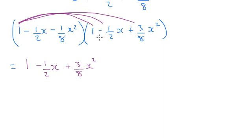Then I'm going to do this middle term. But that is only going to need to be times by these first two terms. Because if I times it by the 3 eighths x squared, I'd get an x cubed term. I don't need to make extra work for myself, so I'm not going to bother.